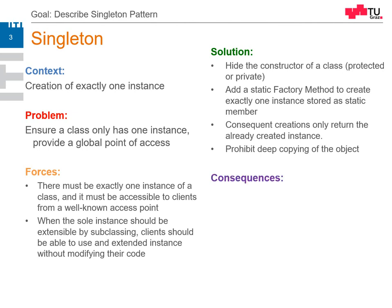So what are the consequences when we use this? We have controlled access to a sole instance. For example, we could also provide multiple instances — for instance, in a thread pool where we have five threads, only these can be used and no other thread should be created. It also reduces the namespace.